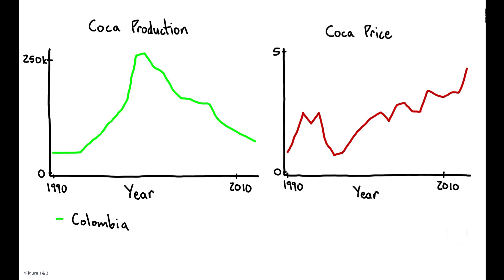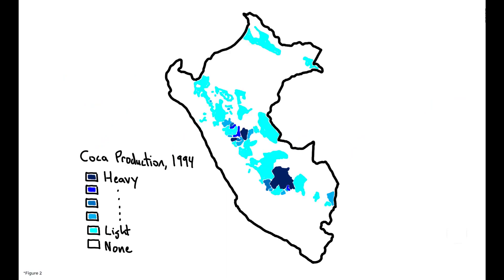These higher prices increased the financial returns to coca farming in neighboring Peru, and production expanded there until, by 2012, the country had overtaken Colombia as the world's largest producer. Notably, coca production is not evenly spread throughout Peru, and is confined to districts endowed with the appropriate agricultural conditions for growing it.